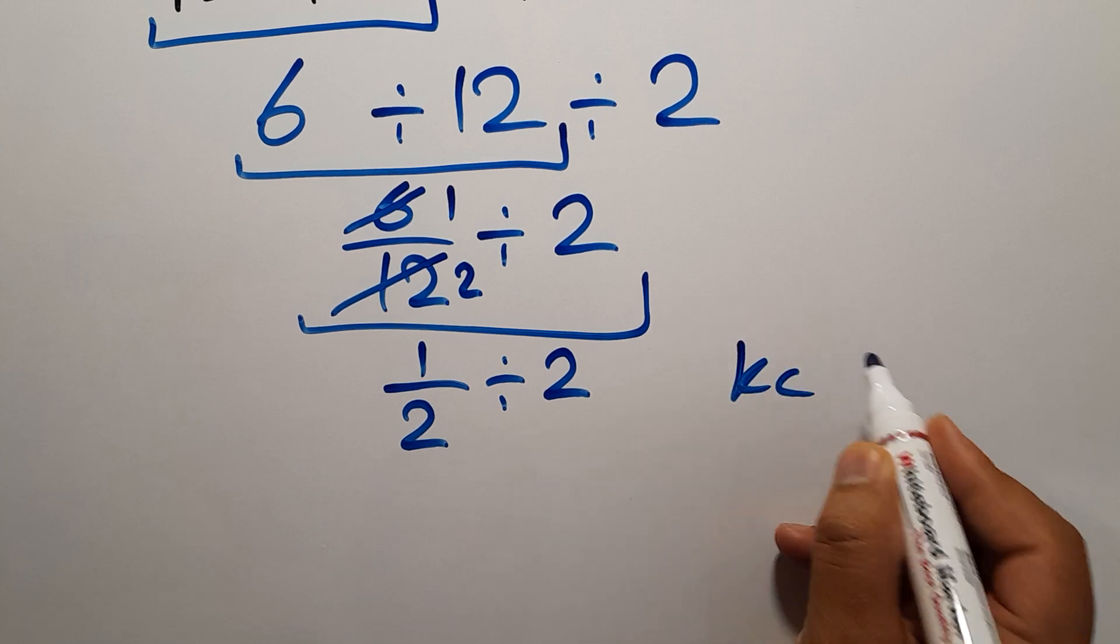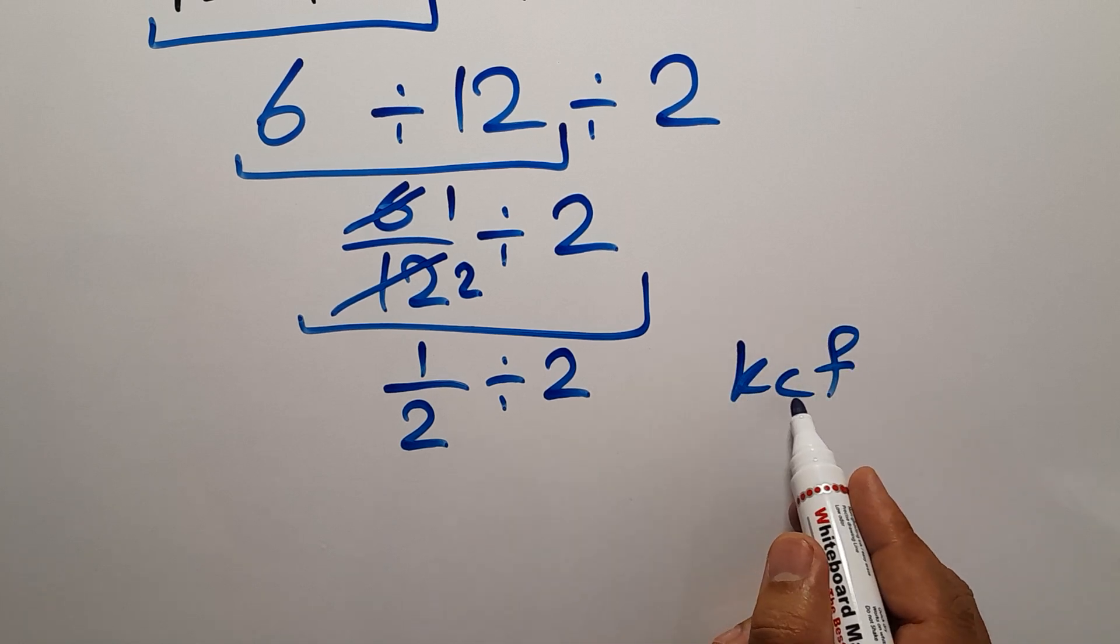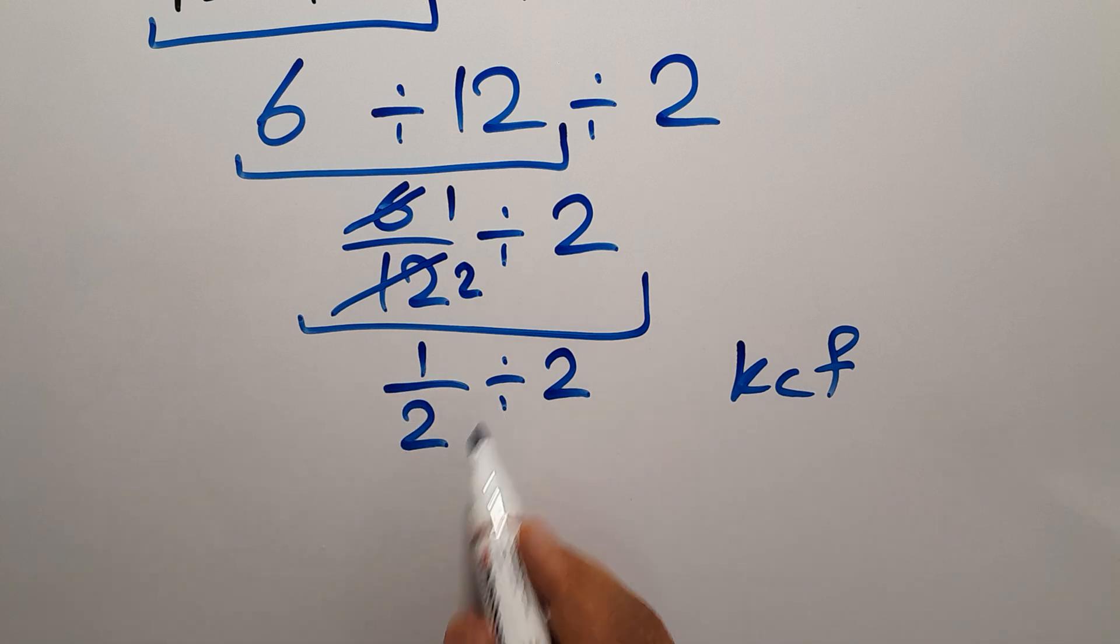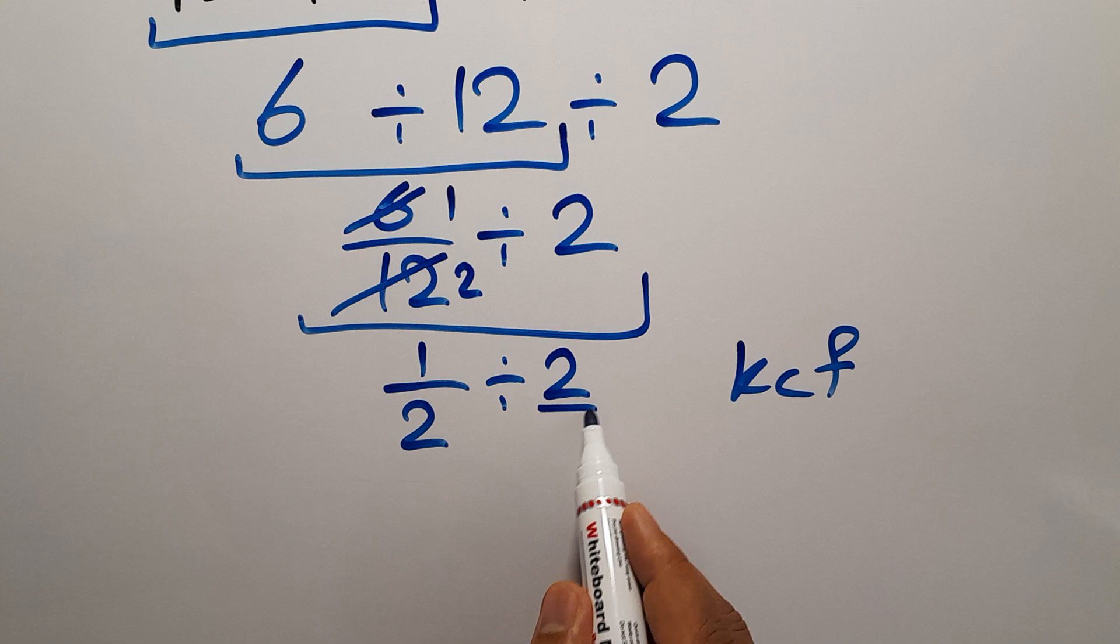In this section, we can use the KCF rule. K stands for keep, C stands for change, and F stands for flip. Keep the first fraction, change division to multiplication, and flip the second fraction. So we can write 1 over 2 times 1 over 2.